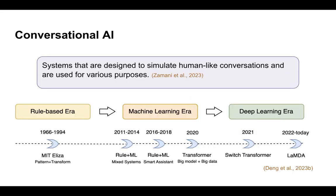We want to start with a bit of background. Conversational agents have quite a rich and long history for AI systems. We will discuss how this timeline advanced, starting from the first conversational agent, Eliza, which was rule-based. We will show more rule-based models during the tutorial, and then starting with 2011 we see the machine learning era, and finally we go into the deep learning era in which we are today.